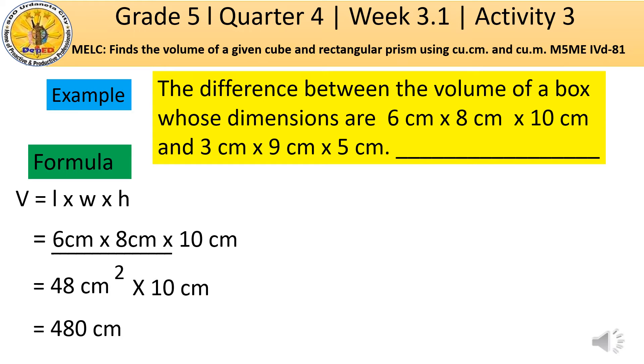Therefore, the volume of the rectangular prism is 480 cm³.